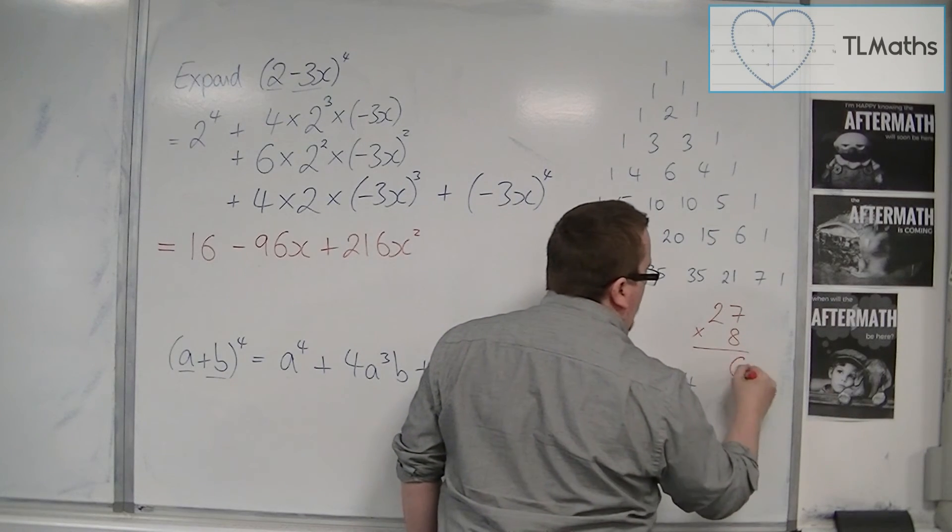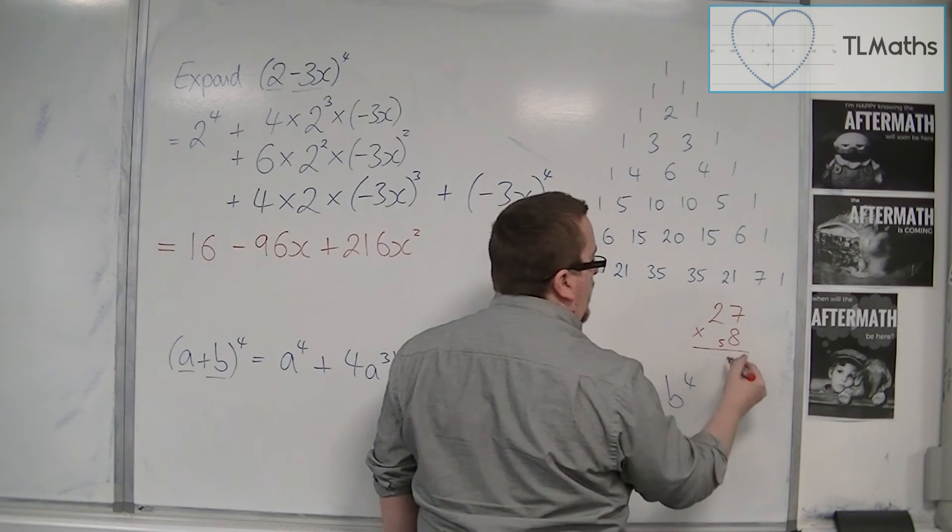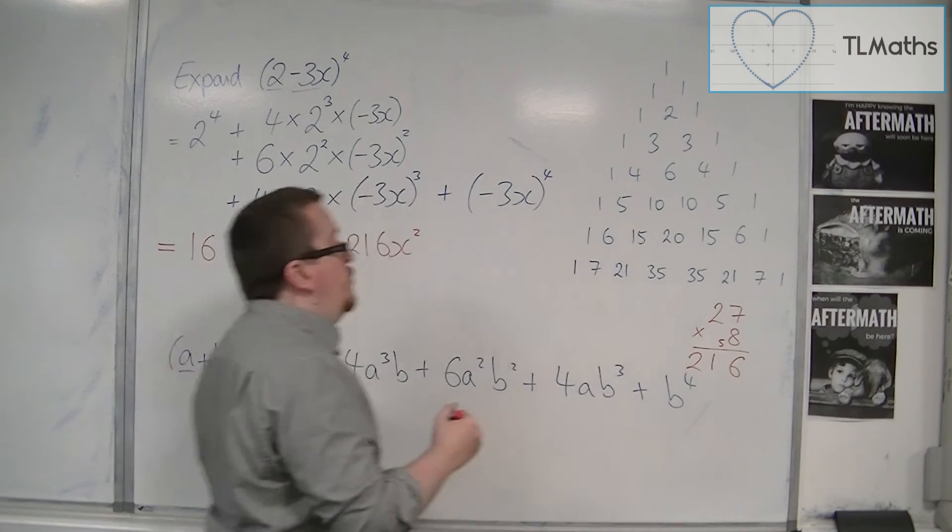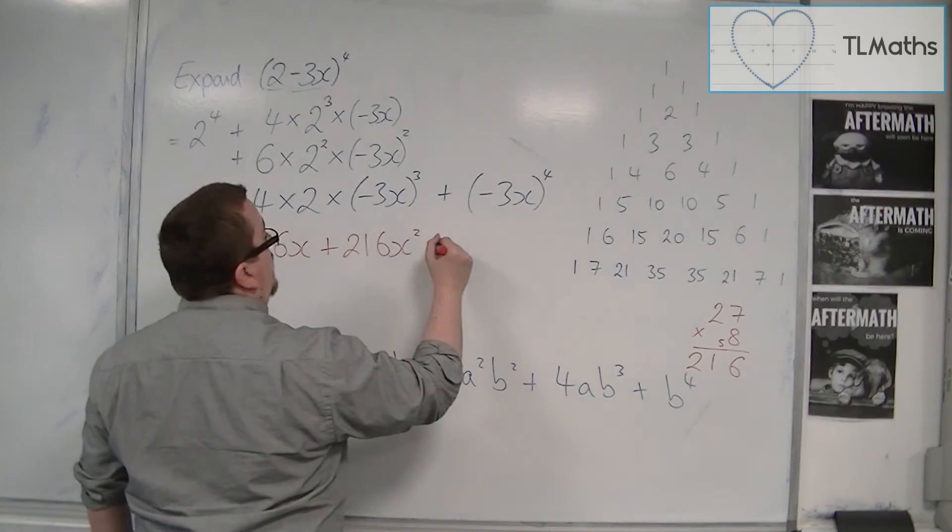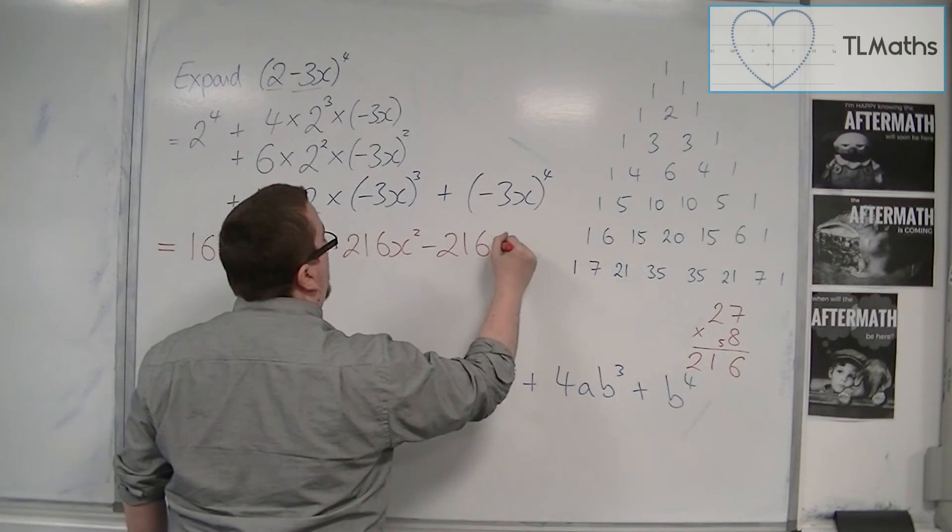7 8s are 56, 2 8s are 16, plus the 5 is 21, so 216, so 216 again. So it's minus 216x cubed.